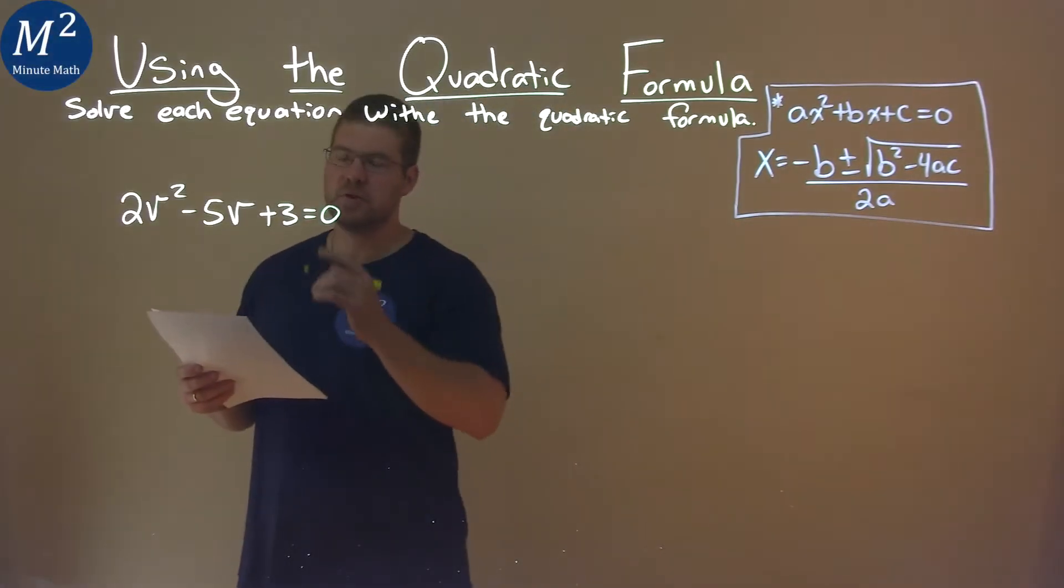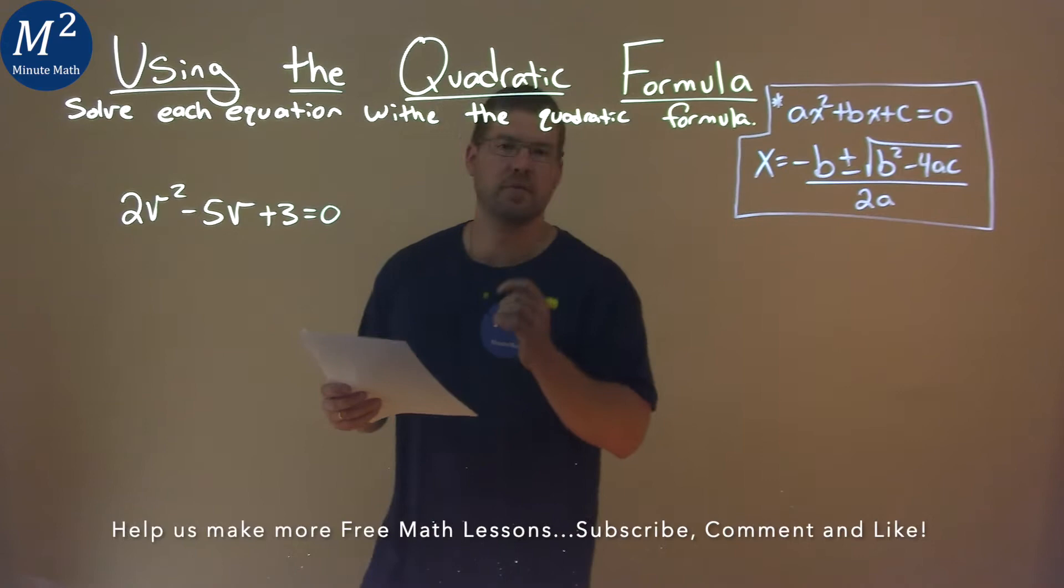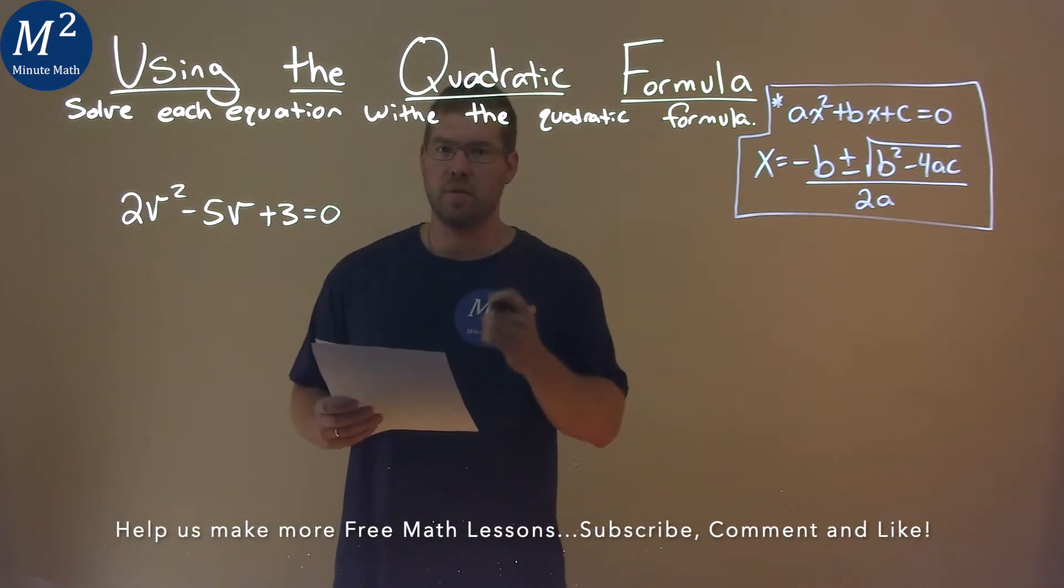We're given this problem right here: 2v squared minus 5v plus 3 equals 0, and we need to solve this using the quadratic formula.